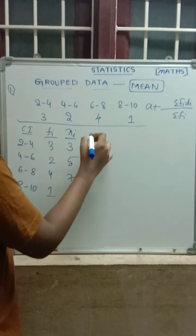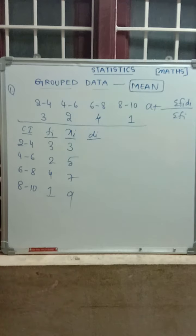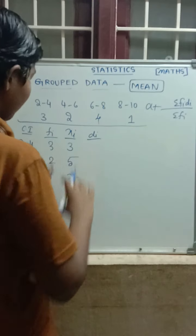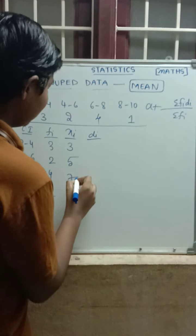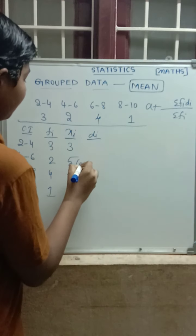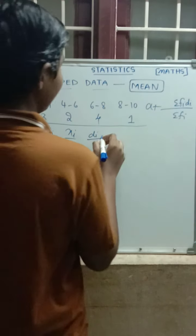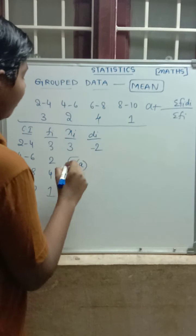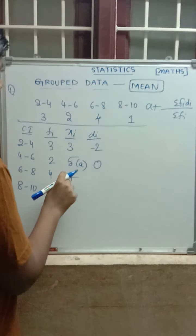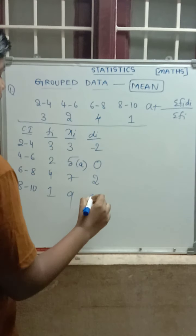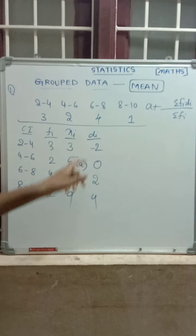Now we find Di = Xi minus A. There is no exact middle value. In the previous video I took A = 7; now I will take A = 5. So Di values: 3 − 5 = −2; 5 − 5 = 0; 7 − 5 = 2; 9 − 5 = 4. These are the Di values.